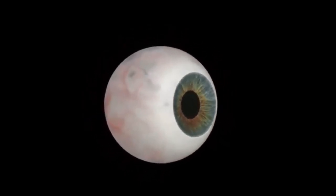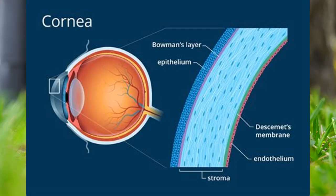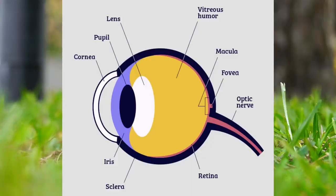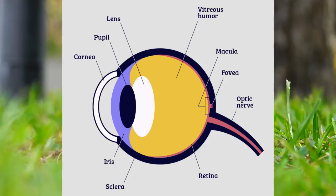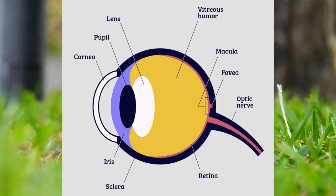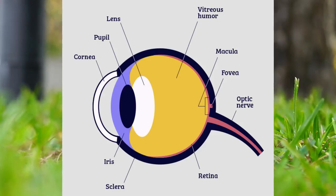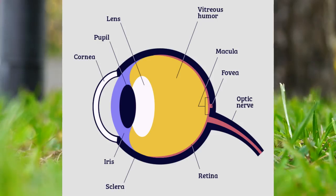Let's go over some of the parts. The cornea — a transparent outer layer of the eye. The iris — a colorful, light-regulating membrane. The lens is a flexible, focusing crystal. The retina is a light-sensitive tissue with millions of photoreceptors.